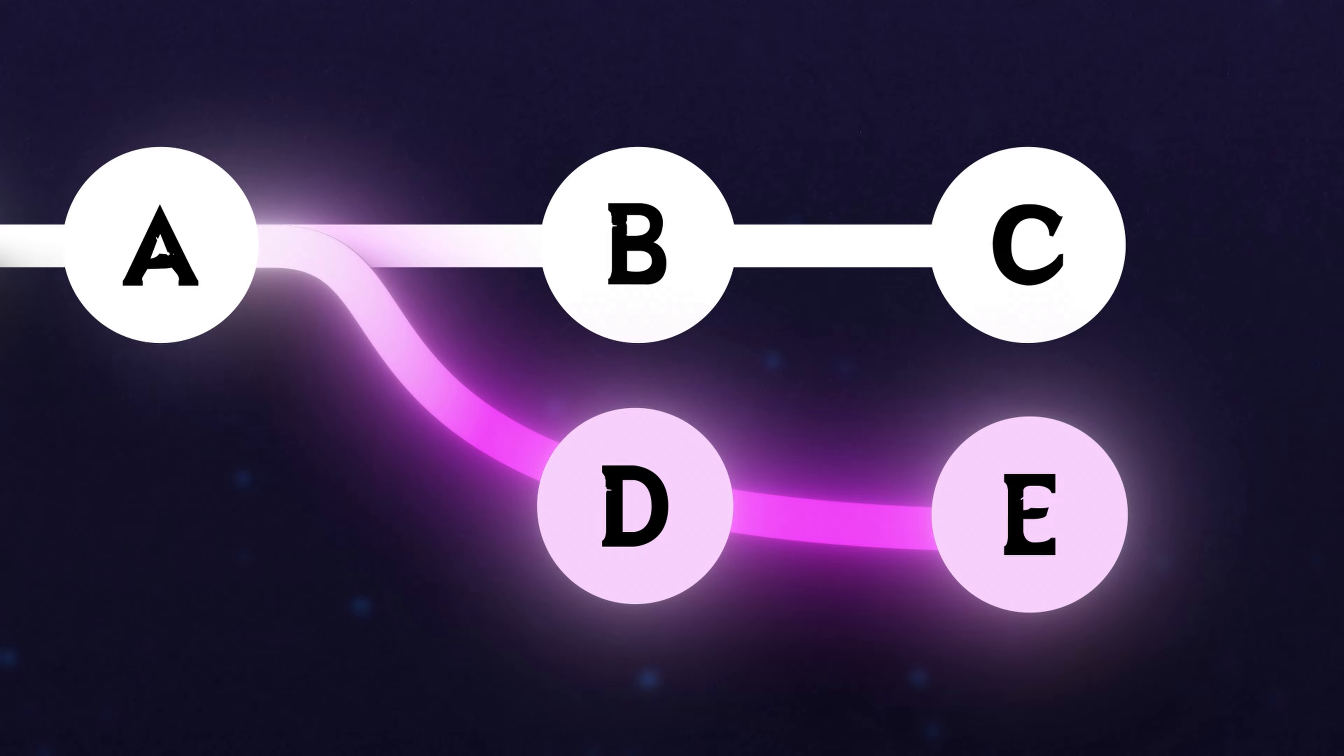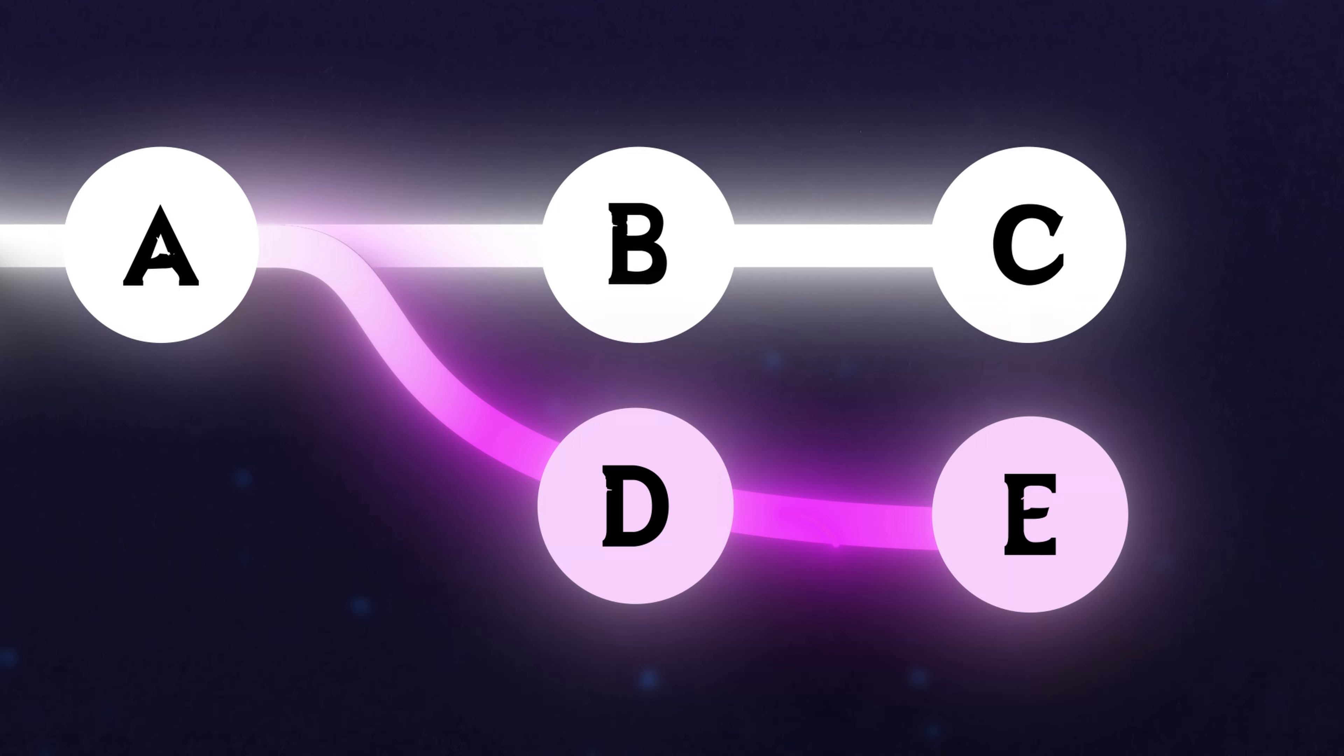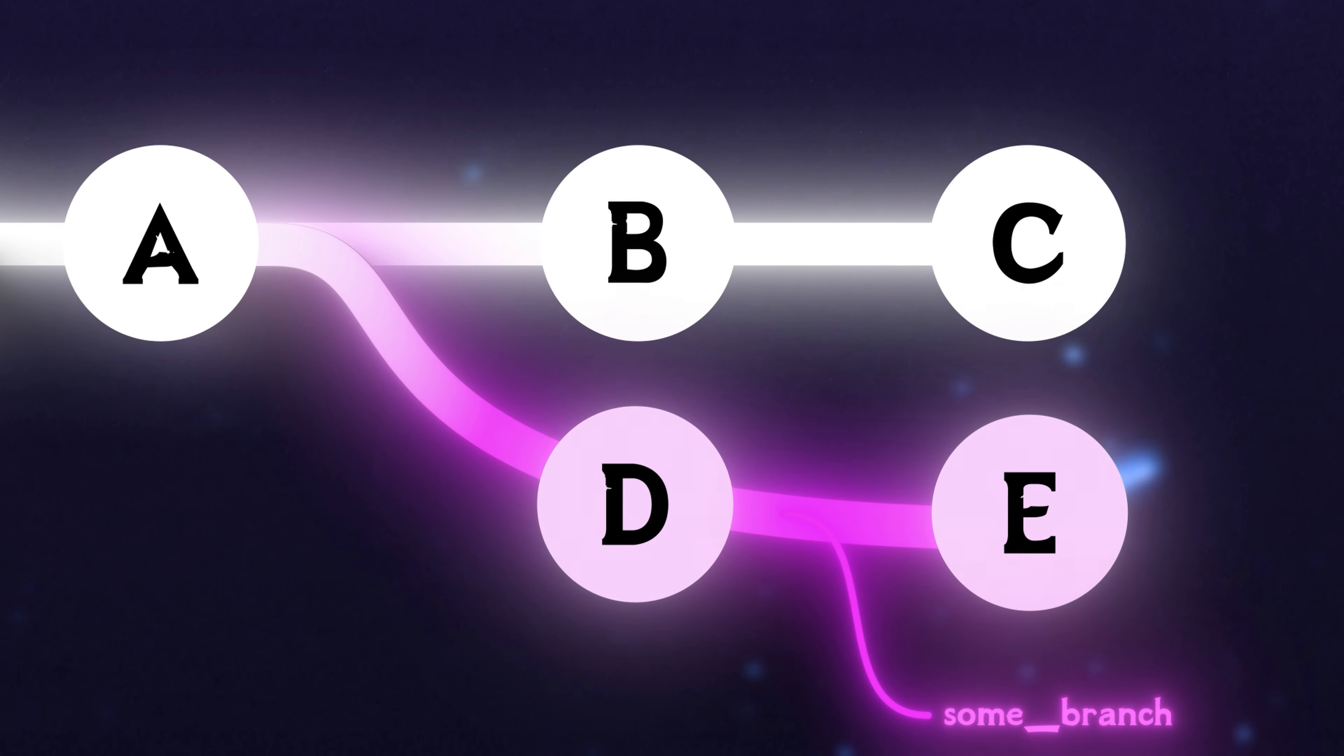We are merging two branches together with diverging history. Look at this thing right here. The diverging history simply means that main branch, the one we branched off of at point A, has commits and we, some branch, have added more commits.